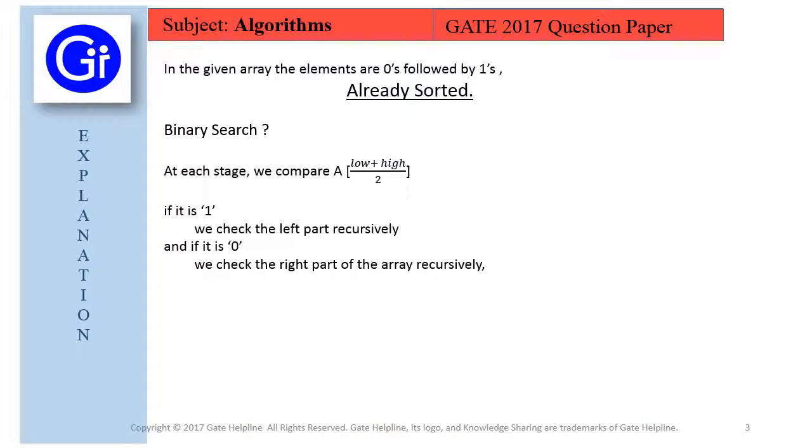As if we are having 0, which simply means that 1 will be on the right-hand side, so we check the right part of the array recursively. And as we know that we are trying to find it through binary search, then we know that in binary search it takes log base 2 n comparisons in the worst case.